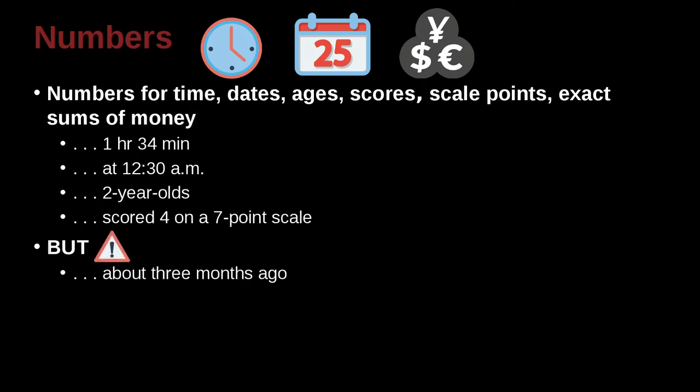But you need to be careful and remember that if you're going to write something like about 3 months ago, that's not an exact time. So you would then, if it's less than 10, you would spell out the word, spell out the number. It started about two days ago. Again, this is not an exact time. This is about time. So in that case, if it's less than 10, you need to write it out. You need to spell it out.